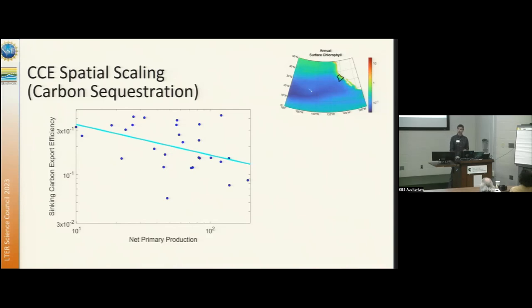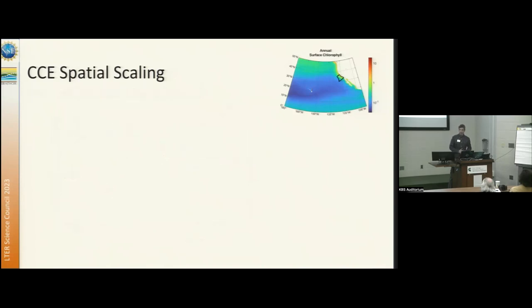And again, we can compare to what we see out at the Hawaii Ocean Time Series site, and their data doesn't fall on our relationship. They basically have low export efficiency and low primary productivity. So the relationship that we have doesn't hold over broader areas. So what's going on?